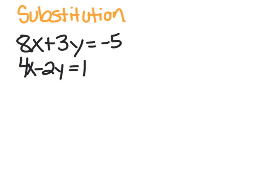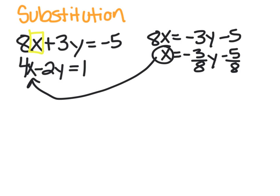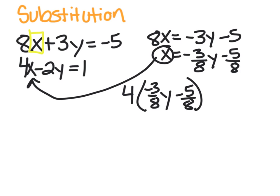Now let's review substitution. Here are two linear equations. Remember in substitution, you have to isolate one of the variables. In this case, I'll isolate x in the first equation. So that means we've got to subtract 3y minus 5, and then divide by 8. So we have x equals negative 3 eighths y minus 5 eighths. And then you plug that x into the x in the other equation. So we have 4 times negative 3 eighths y minus 5 eighths, minus 2y equals 1. And then you multiply this all out, and we're going to end up getting y equals negative 1.